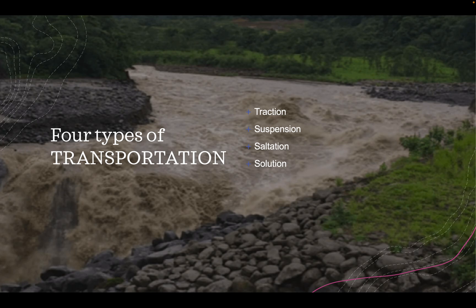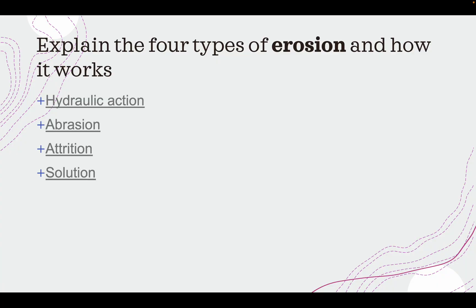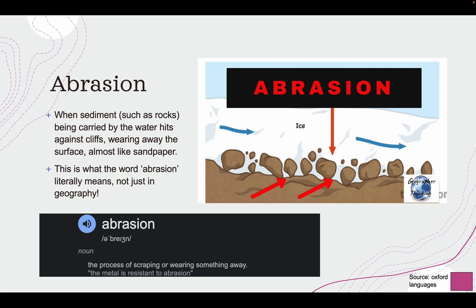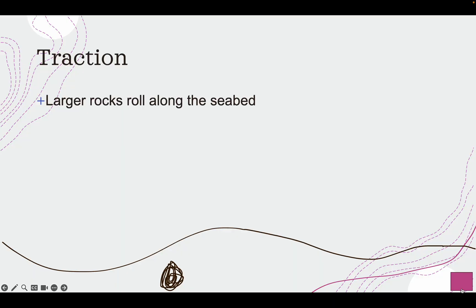Now let's look at the four types of transportation: traction, suspension, saltation, and solution. Before transportation occurs, rocks eroded by erosion get transported through these four methods. Traction is when larger rocks just roll along the seabed — it's similar to abrasion, where these larger rocks roll and scrape along the seabed or riverbank.